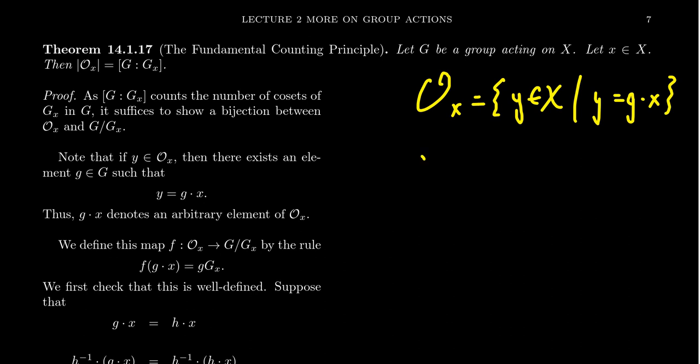The stabilizer G_x, remember what this is? This is all the elements g inside of G such that g dot x equals x. So if we take the index, this is the number of cosets of the stabilizer, this gives you the cardinality of the orbit.